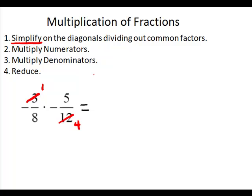Then I check my other diagonal, 8 and 5. These have nothing in common. 5 is a prime, and it doesn't go into 8. So there's nothing in common.